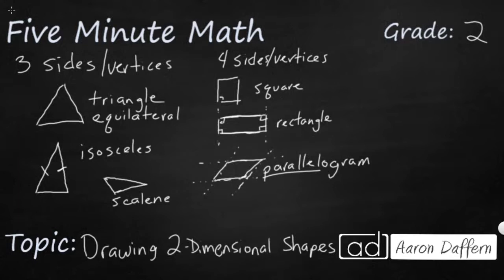Then another one that we can look at would be a trapezoid. So the difference with the trapezoid, once again, you've got a four-sided shape, but you only have one set of parallel lines. The top and the bottom are parallel, but these two sides would touch.